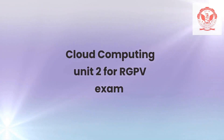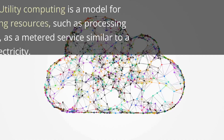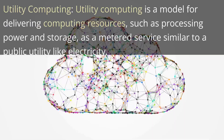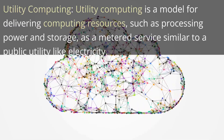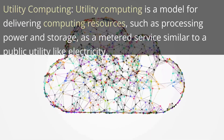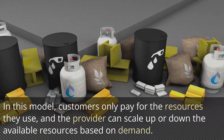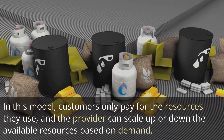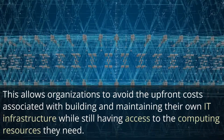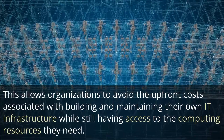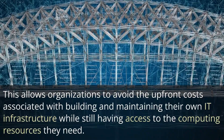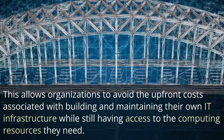Cloud Computing Unit 2 for RGPV Exam. Utility Computing is a model for delivering computing resources, such as processing power and storage, as a metered service similar to a public utility like electricity. In this model, customers only pay for the resources they use, and the provider can scale up or down the available resources based on demand. This allows organizations to avoid the upfront costs associated with building and maintaining their own IT infrastructure while still having access to the computing resources they need.